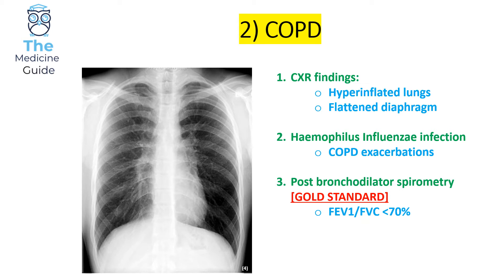The gold standard investigation for COPD is spirometry performed before and after using bronchodilators. COPD is an obstructive lung disease similar to asthma. However, unlike asthma, a patient will still have an FEV1/FVC less than 70% after receiving bronchodilators. In an asthmatic patient you will see improvement in spirometry after bronchodilator use — there is bronchodilator reversibility in asthma but not in COPD. Post-bronchodilator spirometry is the gold standard for COPD.